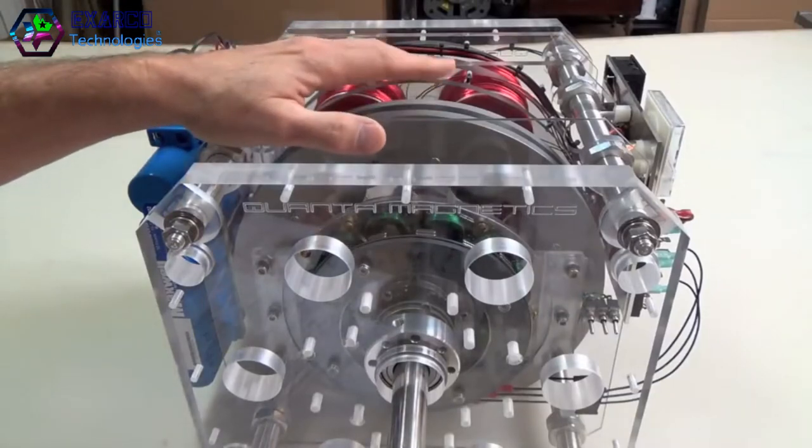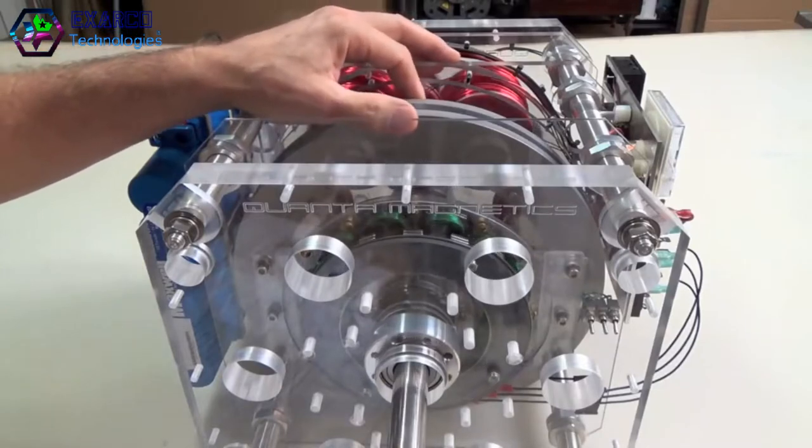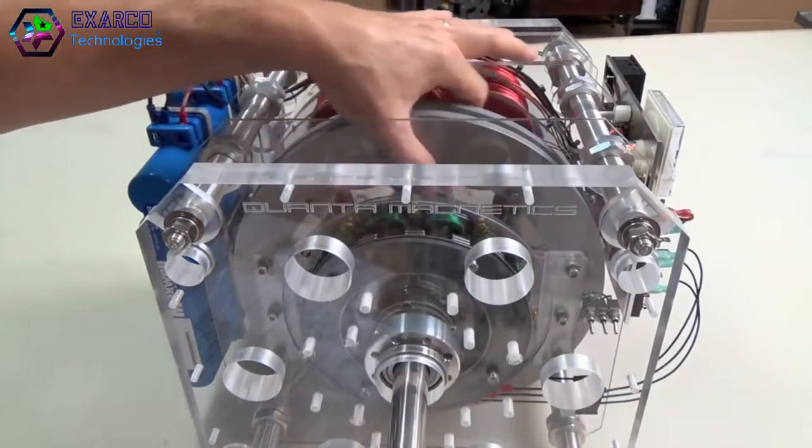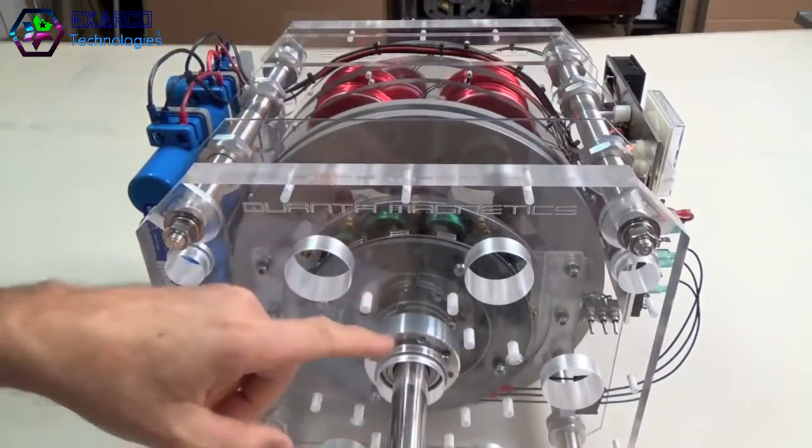This is a gyroscopic flywheel. It's gyroscopic because 90% of its mass, weight, is located on the outer periphery of this rotor, right in through here.